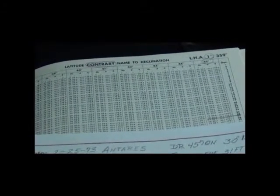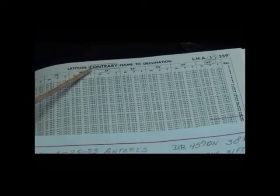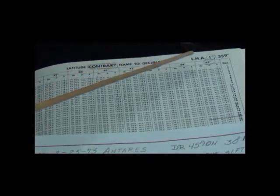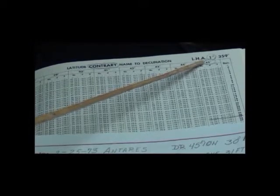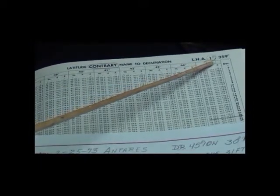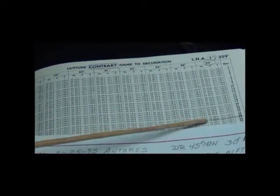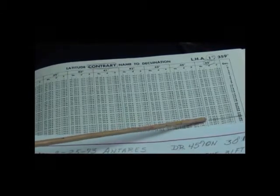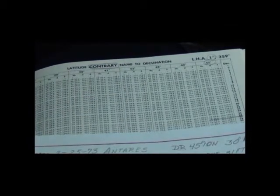Here we can see contrary. That means we're north, the body south of us, or southern hemisphere. The GHA, the local hour angle is one degree, and the declination is 26. So we can read off this figure, a group of figures, and put them into our sight form.